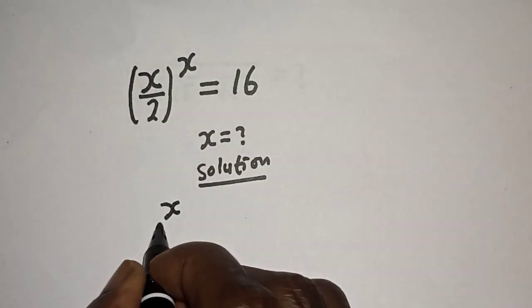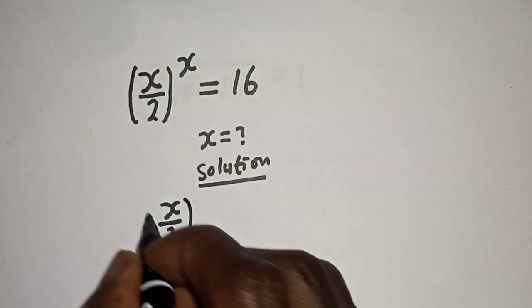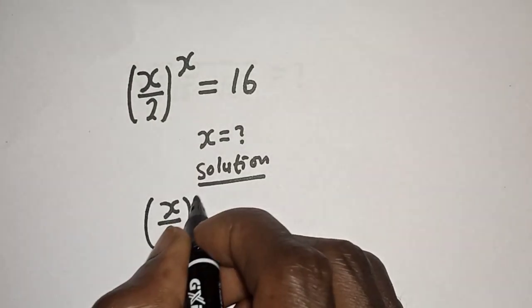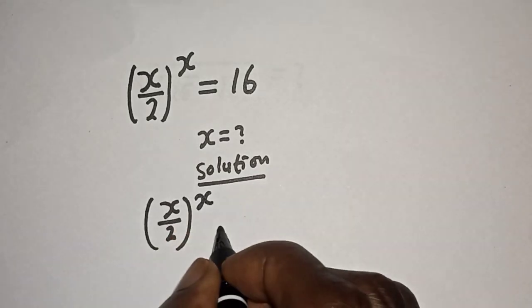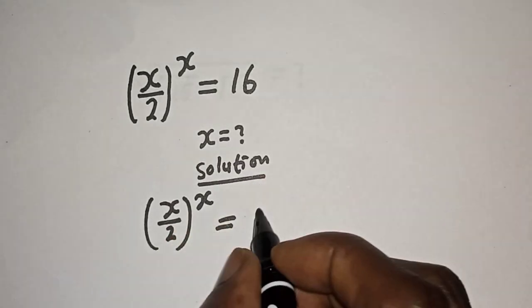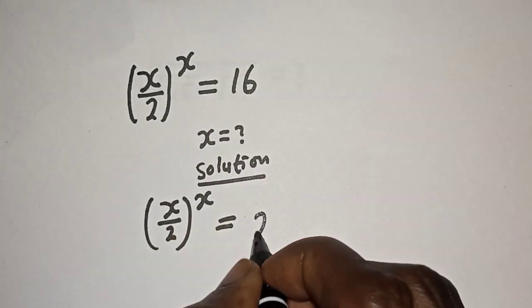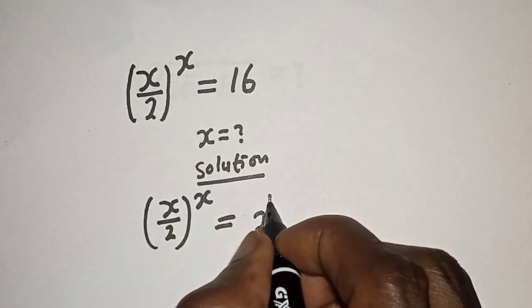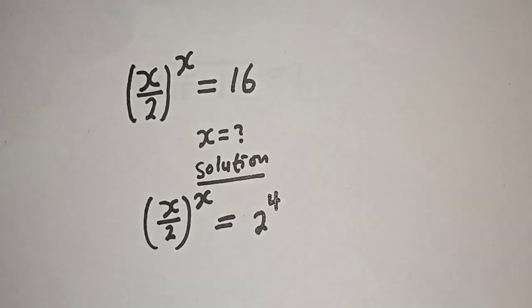The equation (s over 2) raised to the power of s is equal to 16, which can be written as 2 raised to the power of 4.